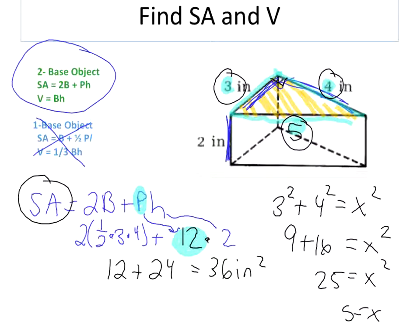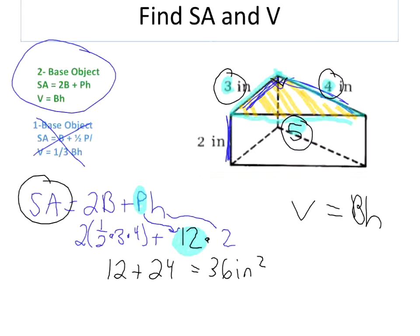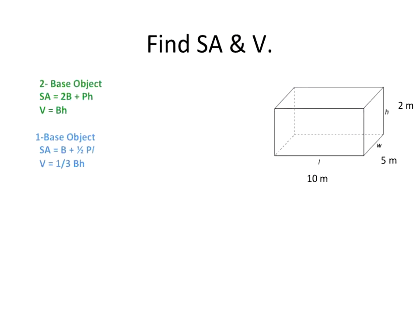Make sure all the steps on the screen make sense to you. If not, press pause, maybe rewind. Now we're going to move on to volume. Volume equals big B times H. So the area of the base, we just found that a minute ago. It's 1 half base times height. So 1 half of 3 times 4 is 6. And the height of your whole figure is 2. So my volume would be 12 inches cubed. Moving on, let's try two more examples today.